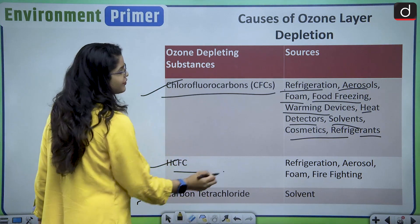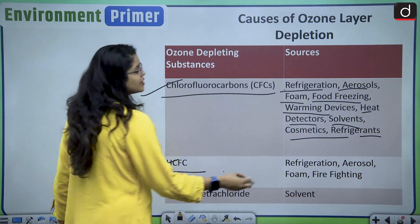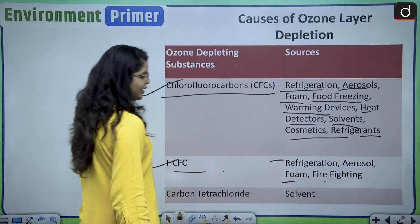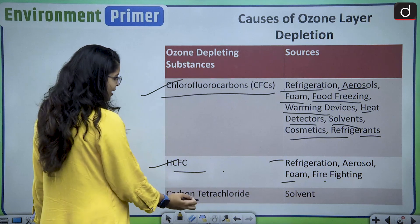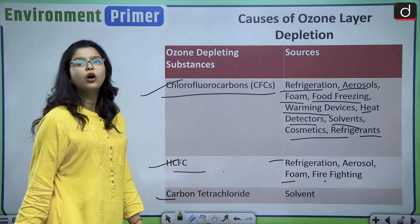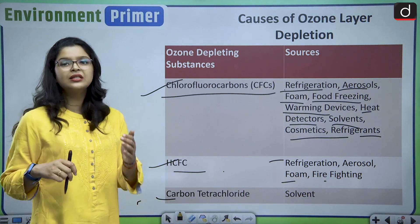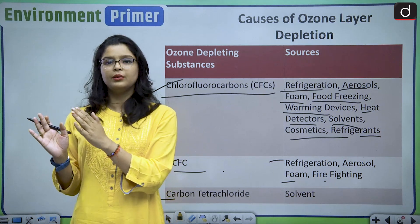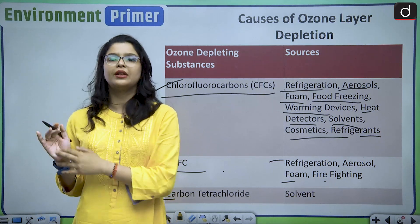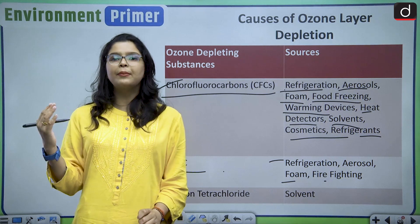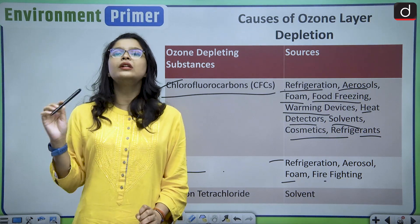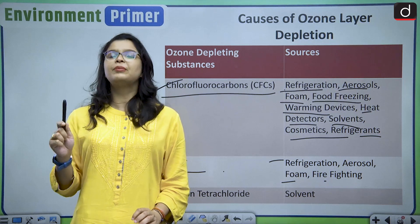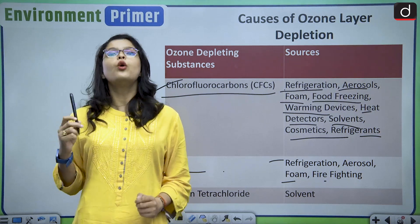Then there are HCFCs, also sourced from refrigeration, aerosols, foam, and fire fighting. There is also carbon tetrachloride, which acts as a solvent in the atmosphere. All of these ozone depleting substances are leading to the depletion of the ozone layer.